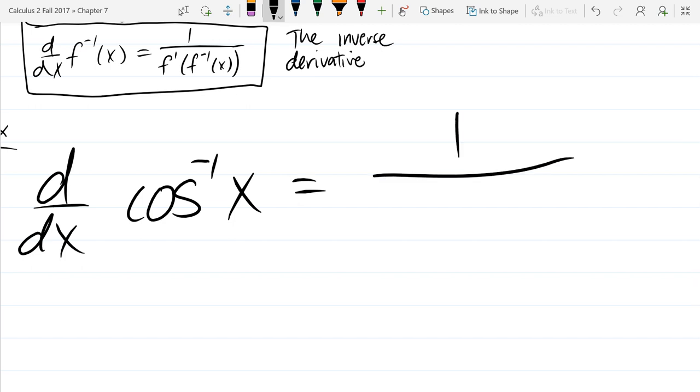So I can write it as 1 over, so f prime that I just circled right there, that'll be cosine prime of f inverse, which is just cosine inverse x. So I could write it like this. And just pay attention, this little prime is not a 1, it's a derivative symbol.